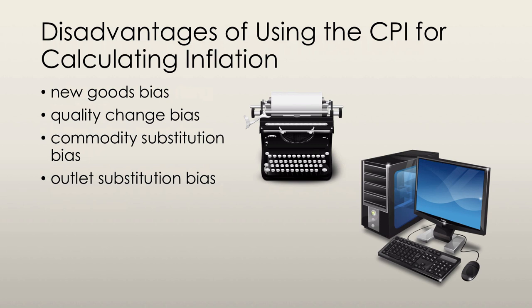There are a couple of disadvantages of using the CPI for calculating inflation. The first is the new goods bias. If the price level is compared between two distinct years — for example, back when we had typewriters versus today's computers — the PC is much more expensive than the typewriter just because it's a new and far superior good. But according to the CPI, it just looks like inflation caused this price difference, without recognizing that they're actually two completely different goods.